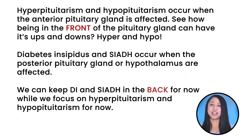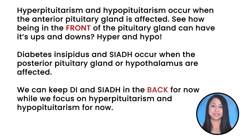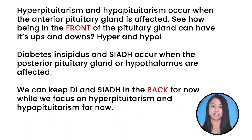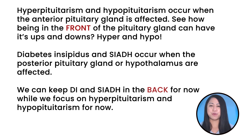Hyperpituitarism and hypopituitarism occur when the anterior pituitary gland is affected — hyper and hypo. Diabetes insipidus and SIADH occur when the posterior pituitary gland or hypothalamus are affected. We can keep DI and SIADH in the back for now while we focus on hyperpituitarism and hypopituitarism.